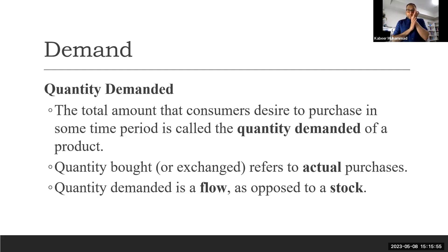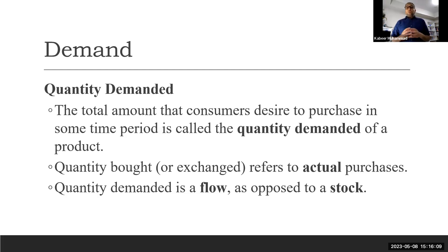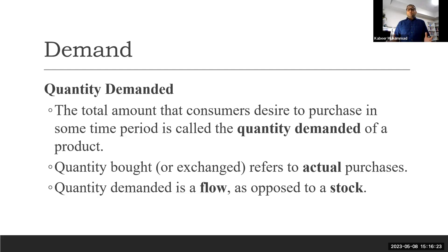When we analyze demand and supply, one basic assumption is that the market is a competitive market. A competitive market means there are many buyers and many sellers, no one can influence the market, and the products are of a homogeneous nature. For now, it's enough to know that the market is competitive — meaning many producers are selling their products.